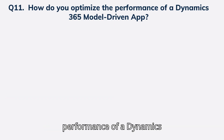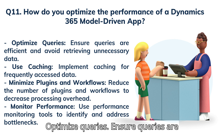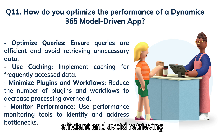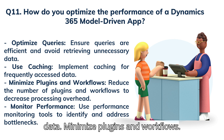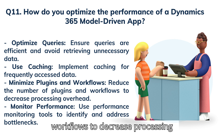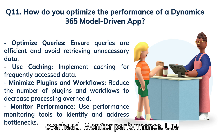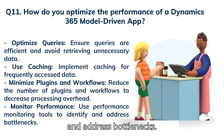Question 11: How do you optimize the performance of a Dynamics 365 model-driven app? Optimize queries: ensure queries are efficient and avoid retrieving unnecessary data. Use caching: implement caching for frequently accessed data. Minimize plugins and workflows: reduce their number to decrease processing overhead. Monitor performance: use performance monitoring tools to identify and address bottlenecks.